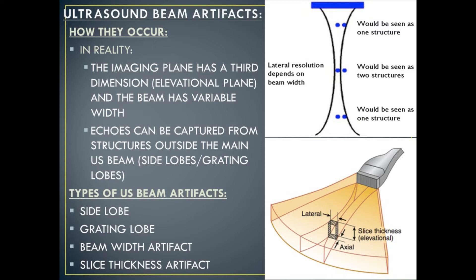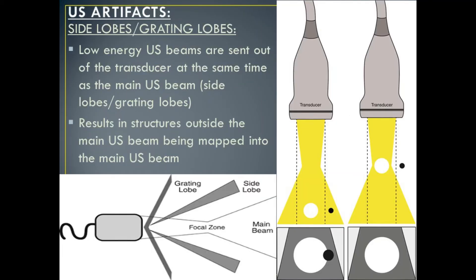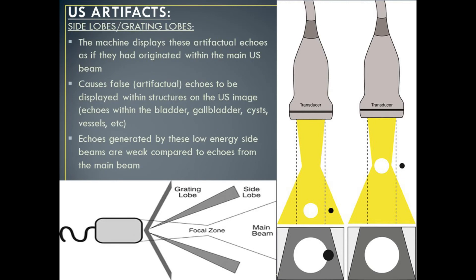Side lobes and grating lobes occur because low energy ultrasound beams are sent out of the transducer at the same time as the main ultrasound beam. This results in structures outside of the main ultrasound beam being mapped into the main beam. The ultrasound machine displays these artifactual echoes as if they had originated within the main ultrasound beam, causing false echoes to appear within structures that should be anechoic — most commonly the bladder, gallbladder, cysts, and blood vessels. Echoes generated by these low energy side beams are weak compared to echoes from the main ultrasound beam.